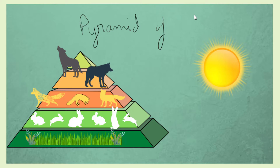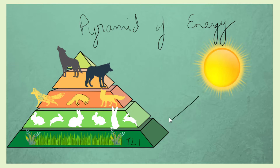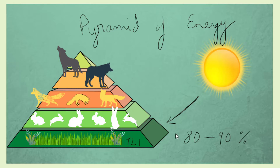The pyramid of energy shows how much energy is trapped in a particular trophic level per unit time per unit area of a given ecosystem. At the base of the pyramid, or trophic level one, we have the producers, which capture the most amount of solar energy coming from the sun through the process of photosynthesis. That energy is used by the producers to make organic matter, and 80 to 90 percent of that energy will be used for various metabolic activities including respiration, with only 10 to 20 percent passed on to the next trophic level.